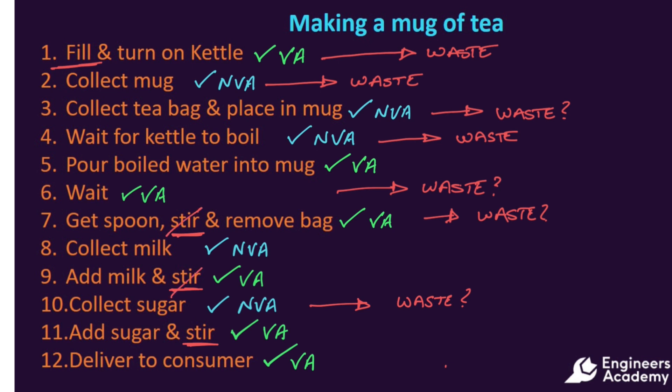We have categorised steps 9 and 11 as value added — adding the sugar and the milk. These will only be value added if the customer requires them. If they do not require either milk or sugar, then it would be waste as it would not be to customer specifications.